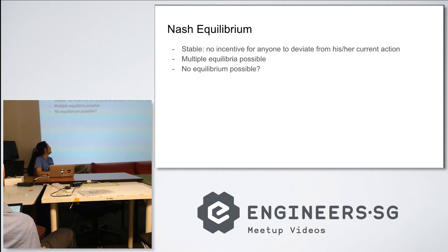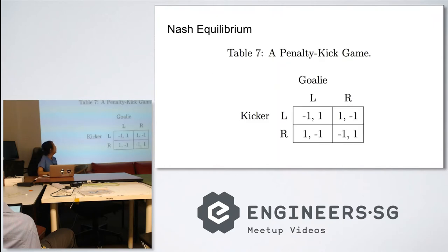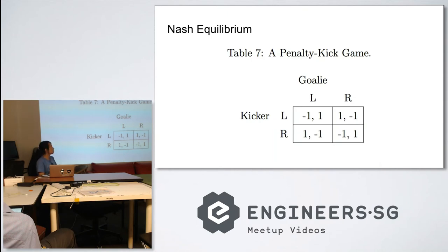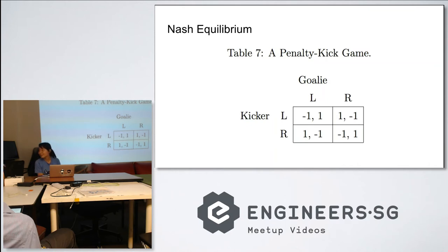So the next question is: are there cases where there is no Nash equilibrium for a game? Consider the penalty kick game: the goalie can go left or right, and the kicker can go left or right. In this case, there's no pure strategy Nash equilibrium — one of them is going to win one way or another.